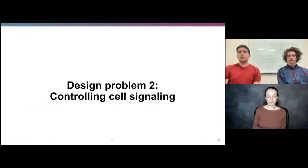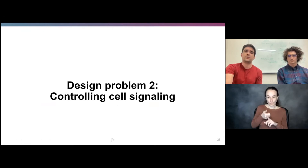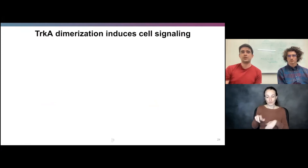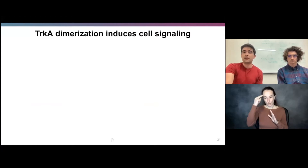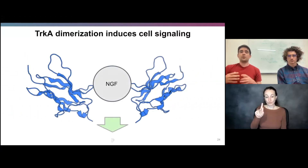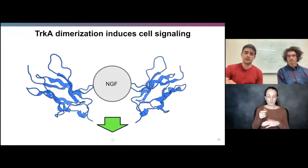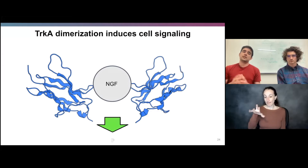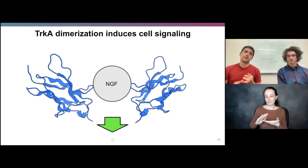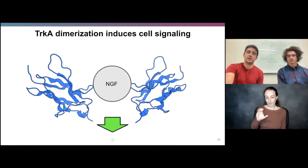The second design problem is controlling cell signaling. We were interested in the receptor TrkA, which is the receptor for nerve growth factor. Signaling through TrkA controls the proliferation and differentiation of nerve progenitor cells. Normally nerve growth factor dimerizes two protein subunits of TrkA and induces cell signaling. A de novo ligand for inducing signaling through a receptor can be more specific, more stable, easier to manufacture, and have fewer pleiotropic side effects because it doesn't interact with any other receptors.